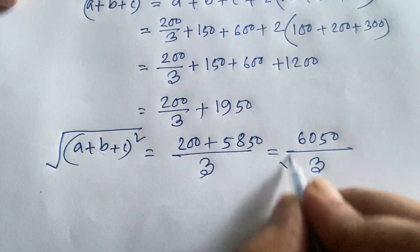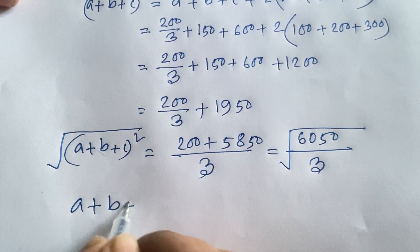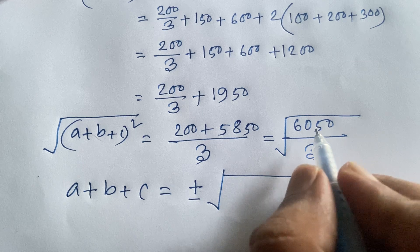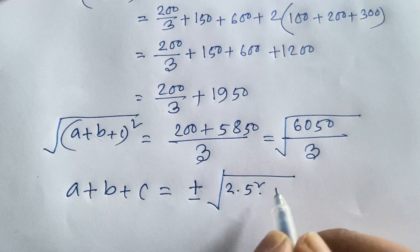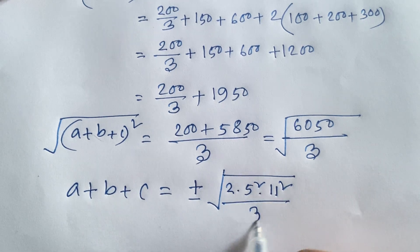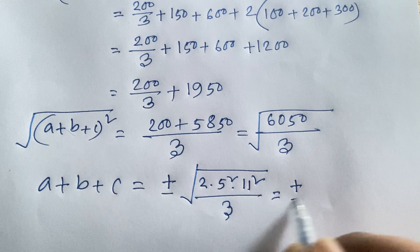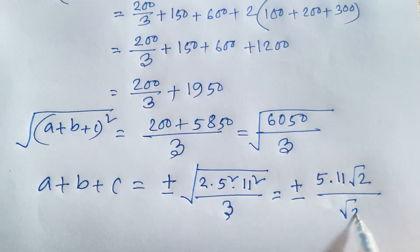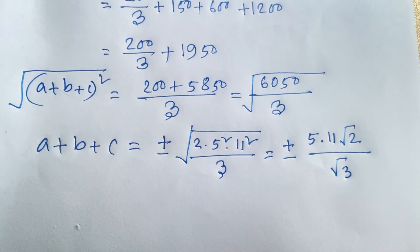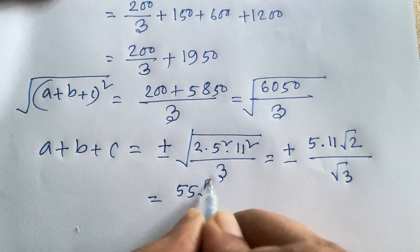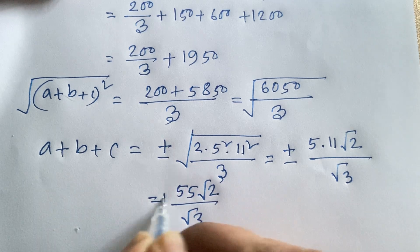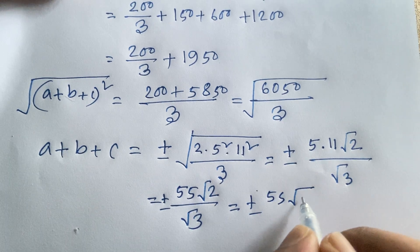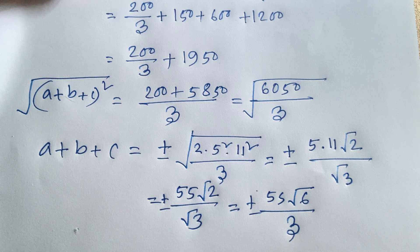Taking the square root, a plus b plus c equals plus or minus the square root of 6050/3. Simplifying: 6050 equals 2 times 25 times 121, which is 2 times 5² times 11². So the answer is plus or minus 5 times 11 times √2 over √3, which simplifies to plus or minus 55√6 over 3. This is our final answer to this math olympiad question.